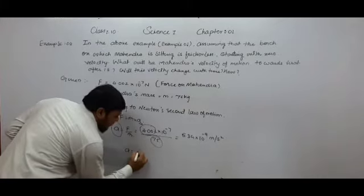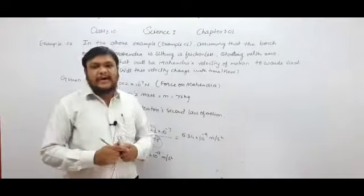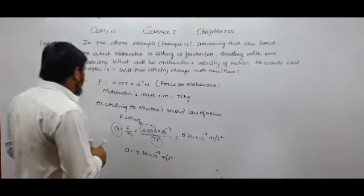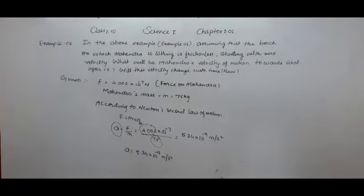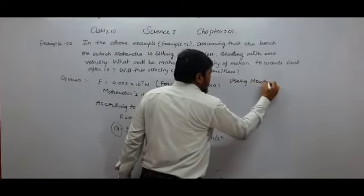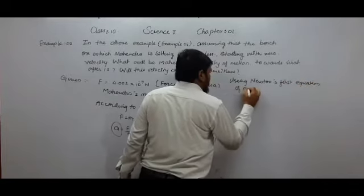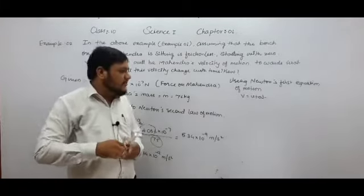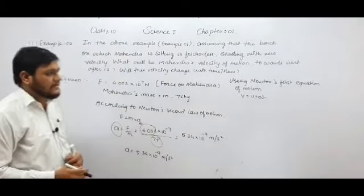So A is equal to 5.34 multiplied by 10 raised to power minus 9 meter per second square. Using Newton's first equation of motion, we can calculate the velocity of Mahindra after 1 second. Newton's first equation of motion is V is equal to U plus AT. The second equation is S is equal to UT plus half AT square, and the third is V square equals U square plus 2AS.